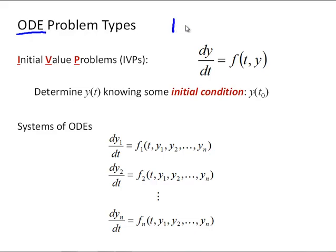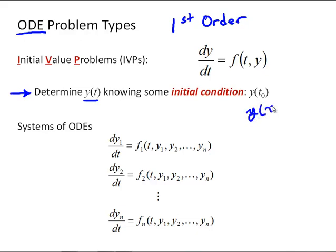First-order ordinary differential equations are called initial value problems. Any first-order differential equation can be written as dy/dt equals some function f of t and y. Our goal is to determine y of t, knowing some initial condition y at t₀ — the initial state of y at some initial time. Then we numerically solve to see how y evolves in time or space.